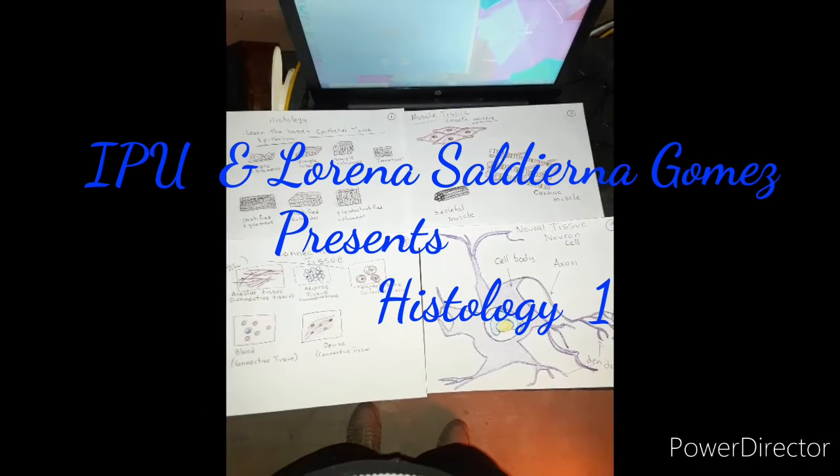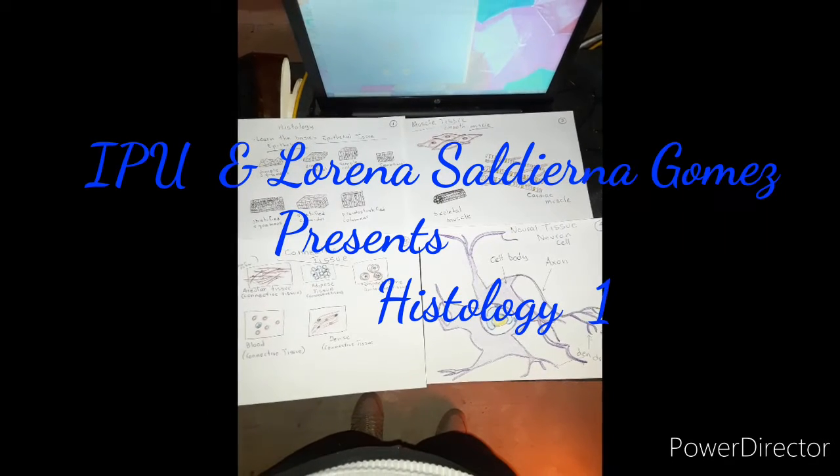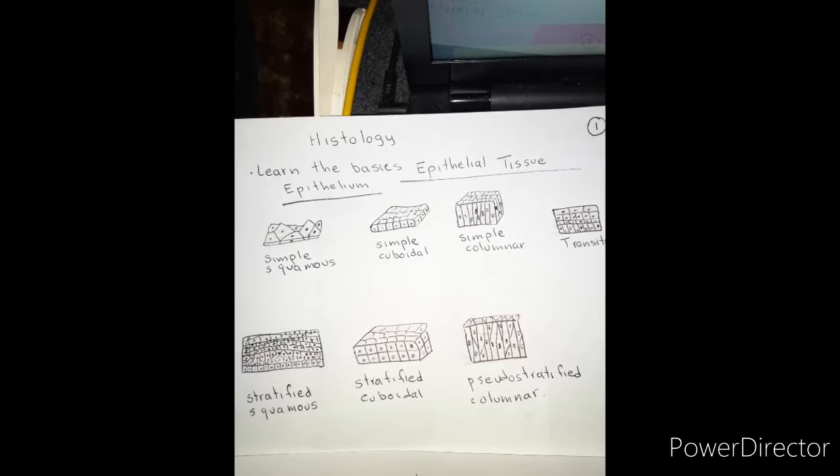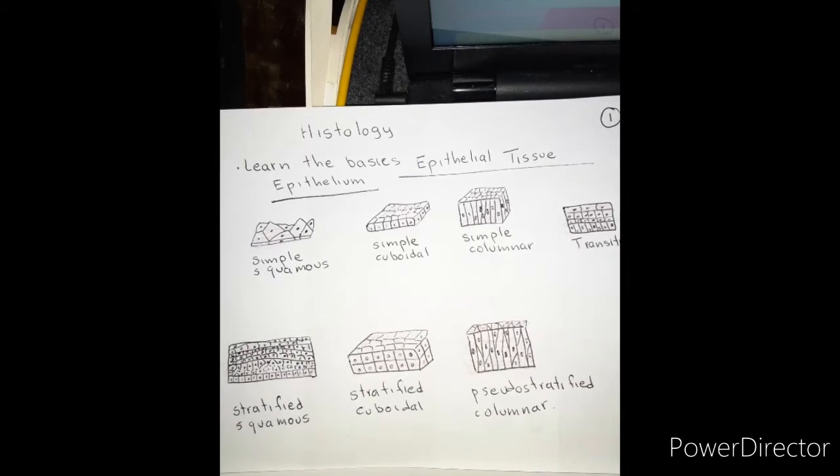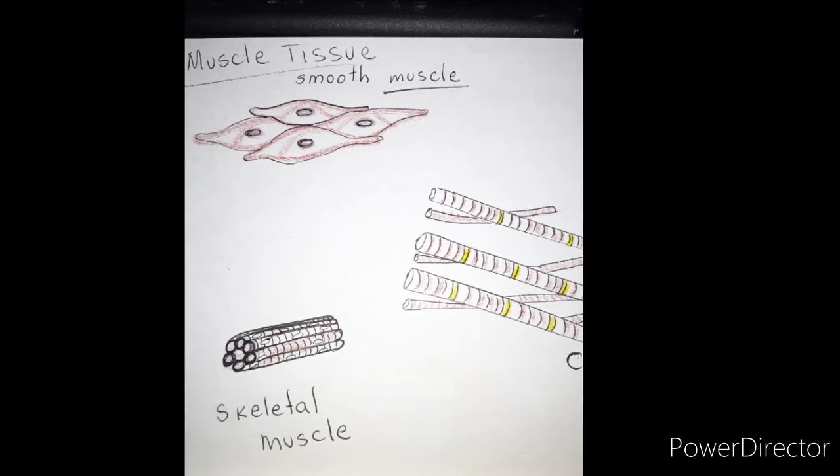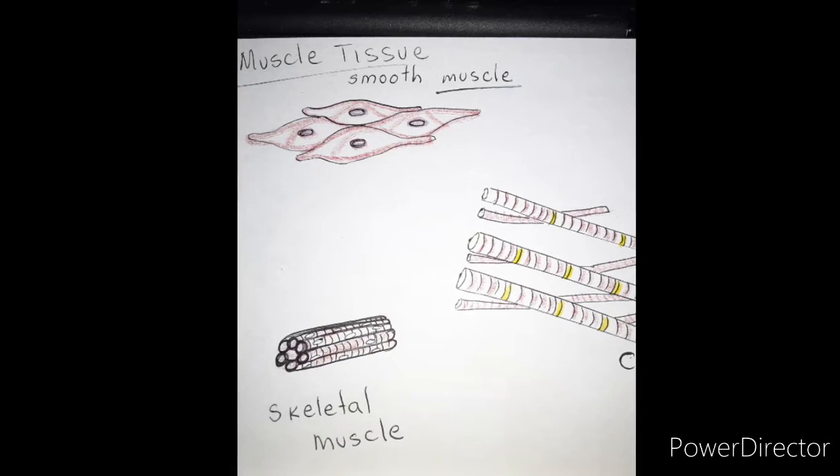It takes four types of tissue to study histology of the human body. Se toman cuatro tipos de tejidos para estudiar el cuerpo humano.